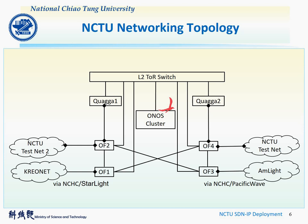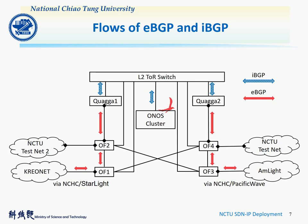SDNIP can be seen as a BGP speaker with no difference from a traditional BGP router. BGP information can be classified into IBGP and EBGP. From the graph shown, communications inside SDNIP are IBGP, and external communications are EBGP, including connections to Creonet in Korea, AMLight in the USA, and NCTU Testnet in two different ASNs. There are also two BGP speakers functioning and multiple paths between OpenFlow switches for redundancy.